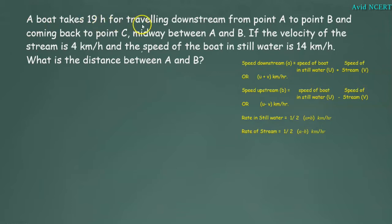A boat takes 19 hours for travelling downstream from point A to point B and coming back to point C, midway between A and B. If the velocity of the stream is 4 km per hour and the speed of the boat in still water is 14 km per hour, what is the distance between A and B?